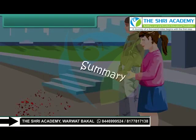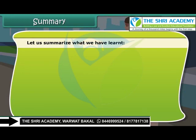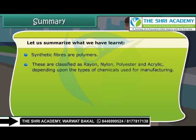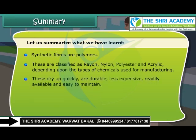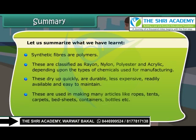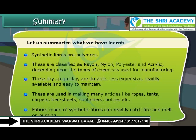Let us summarize what we have learnt. Synthetic fibers are polymers, classified as rayon, nylon, polyester and acrylic, depending upon the types of chemicals used for manufacturing. These dry up quickly, are durable, less expensive, readily available and easy to maintain. They are used in making many articles like ropes, tents, carpets, bedsheets, containers, bottles, etc. However, fabrics made of synthetic fibers can readily catch fire and melt on burning.